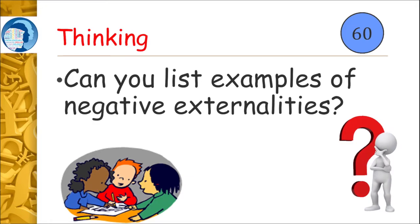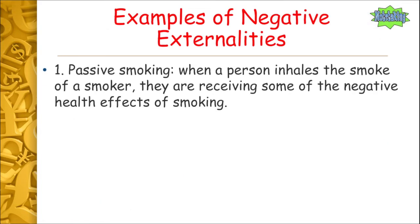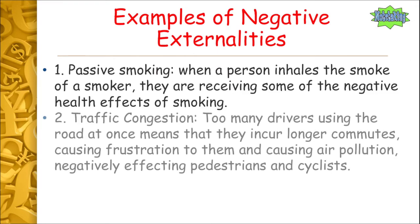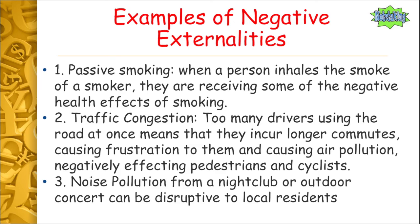Negative externalities — can you think of any examples? Pause the video, jot them down, and when you're ready play to continue on. Passive smoking is one: a person who inhales a smoker's cigarette smoke has to smell it and receives negative health effects without choosing to smoke. Traffic congestion is another — too many drivers on the road causes longer commutes and further air pollution affecting pedestrians and cyclists. Noise pollution from a nightclub or outdoor concert can also be disruptive to local residents who aren't attending.